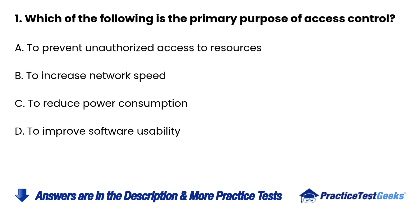Question 1: What is the primary purpose of access control? A. To prevent unauthorized access to resources. B. To increase network speed. C. To reduce power consumption. D. To improve software usability.